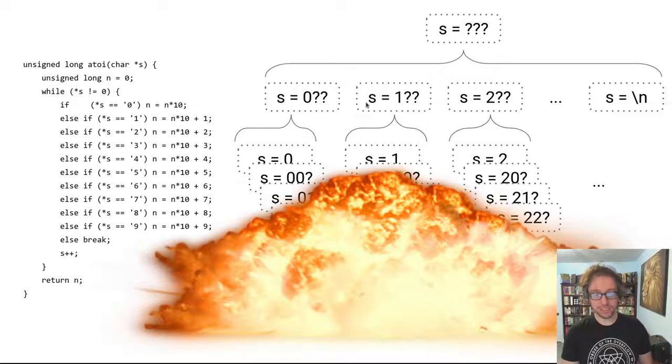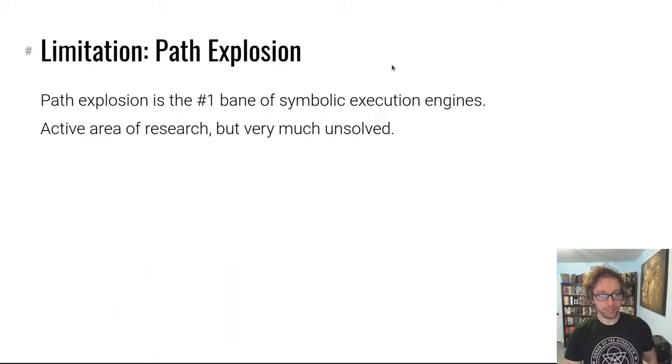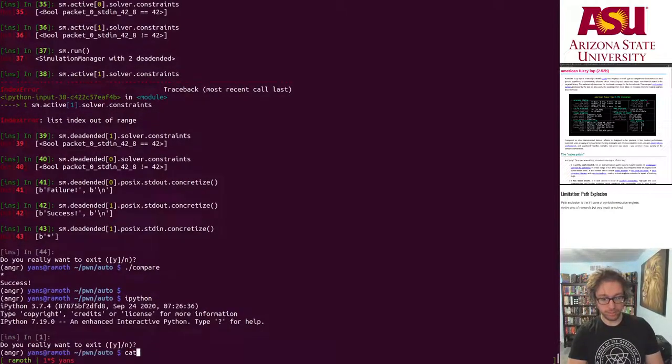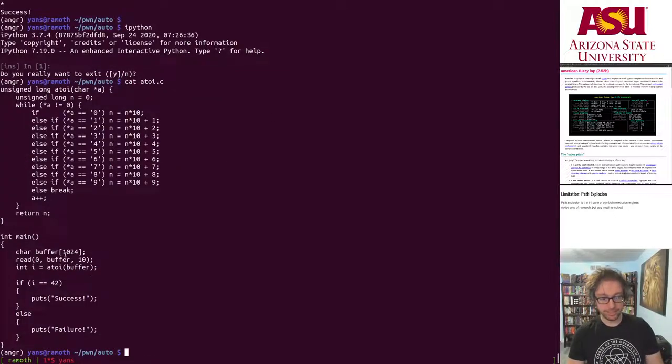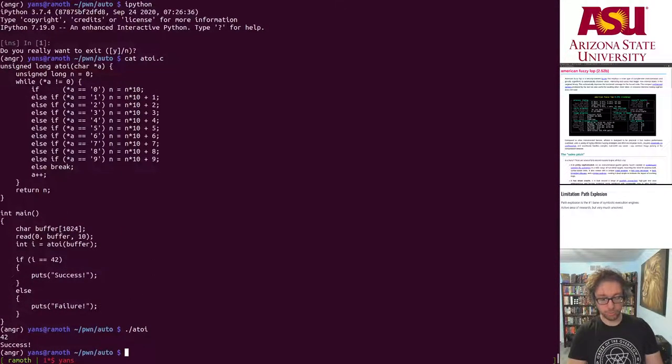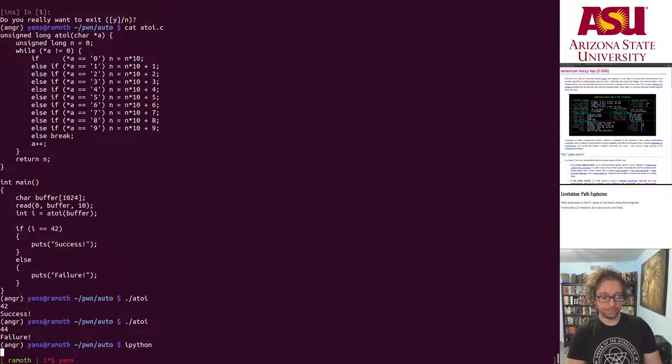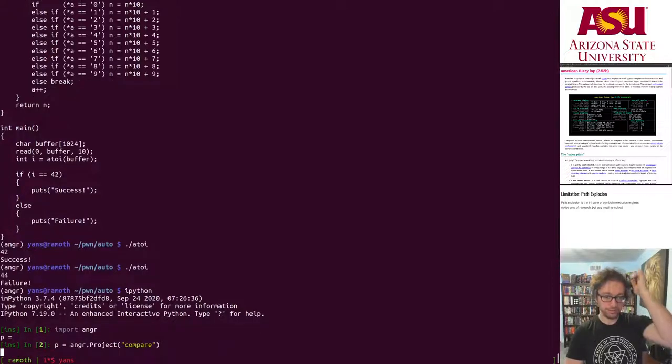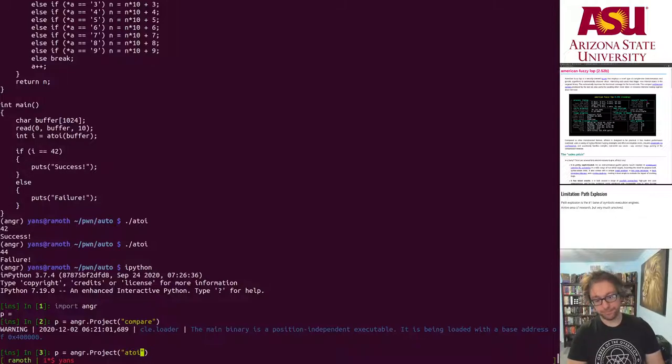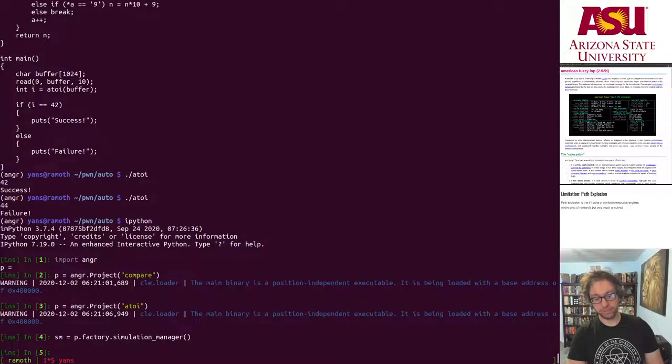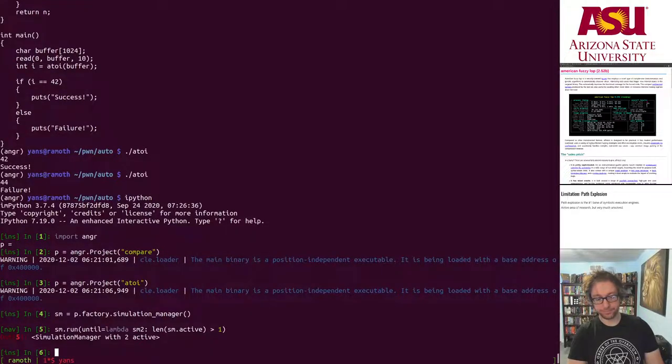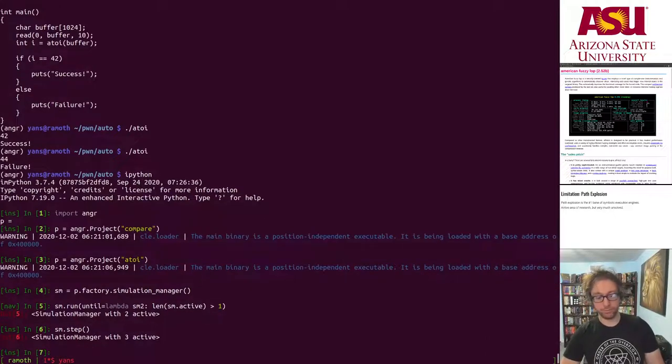And this is the number one reason that symbolic execution is non-viable. Let's take a look at what happens in angr. Let's grab our ipython session. I should show you I created this exact thing, A2I.c. Now it does success failure, I'll show you that it does work with 42 and not with other things. All right, import angr. Load the A2I binary.